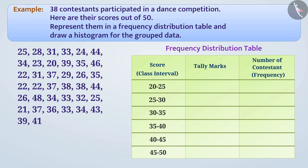Then, we will take the scores one by one and represent it using the tally marks in the appropriate class interval. Here, 25 is included in these two class intervals. Keep in mind that common observation will always be included in the higher class interval. So, 25 will be represented in the class interval 25 to 30. In this way, we will create tally marks for all numbers.